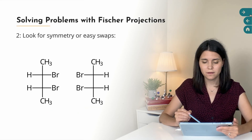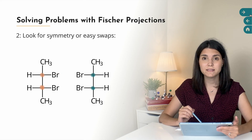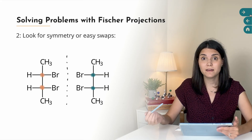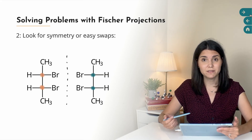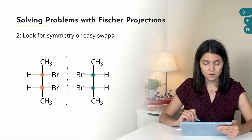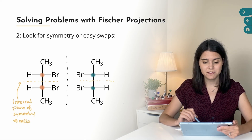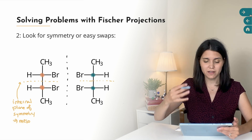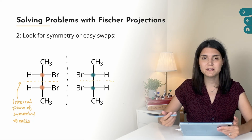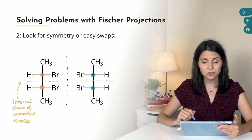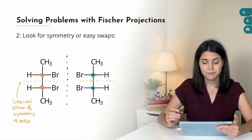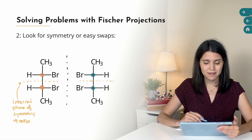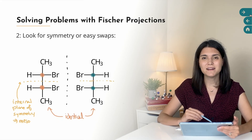Here's another similar pair. Both chirality centers appear swapped and they look like mirror images, so we might say right away that these are enantiomers. But we can also see that both of these molecules have an internal plane of symmetry — a mirror plane inside the molecule with an identical reflection on each side. When a molecule has an internal plane of symmetry, it's achiral, and an achiral compound cannot have an enantiomer. So these are each meso compounds, meaning they are identical to one another.